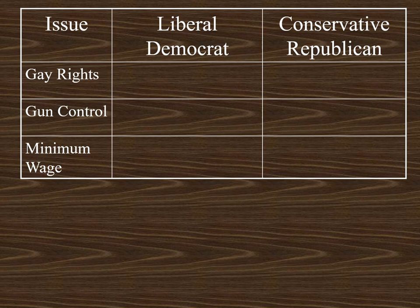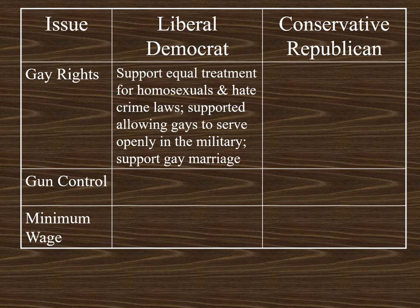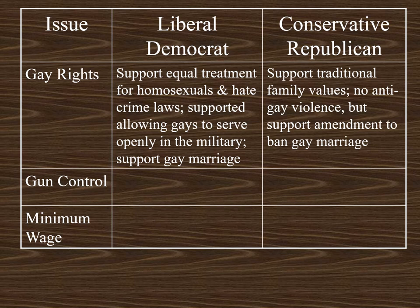Here are three more issues that divide Democrats and Republicans, starting with gay rights. Liberal Democrats support equal treatment for homosexuals under the law. For example, if a gay couple wanted to adopt children, they would support that. If someone was fired from their job because they were gay, they would say that's an unlawful firing. Liberal Democrats worked to allow homosexuals to serve openly in the military and pushed to legalize gay marriage. Conservative Republicans support traditional family values — a traditional family headed by one man and one woman. They would be completely opposed to violence against homosexuals, but many conservative Republicans have supported a constitutional amendment to ban gay marriage, believing it takes away from traditional marriage.